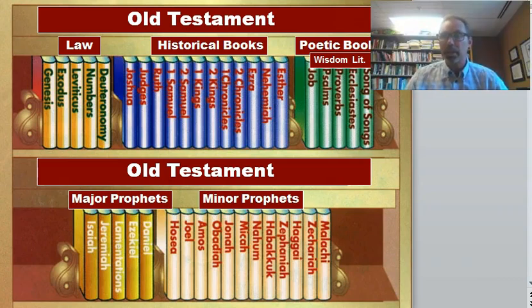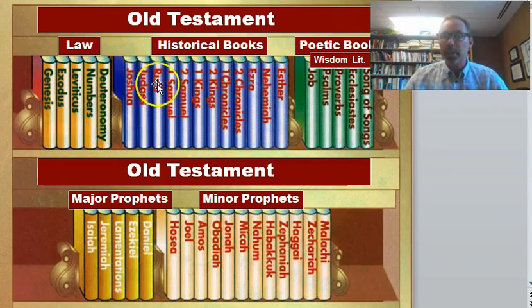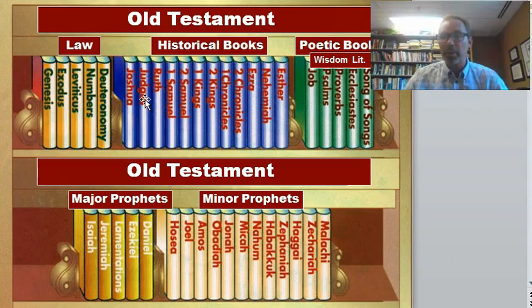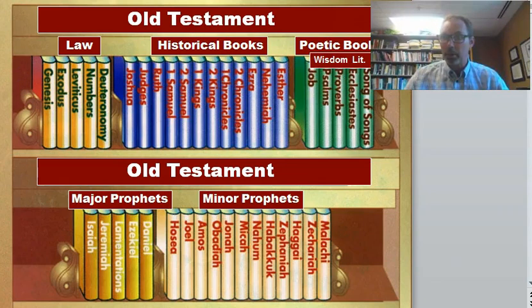Here you see the canon of the Old Testament with the four sections of that Protestant canon: the Law, the History, the Poetry books, and then the Prophets.